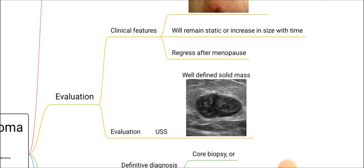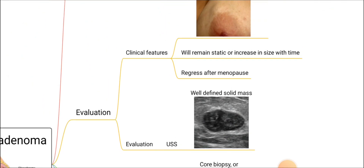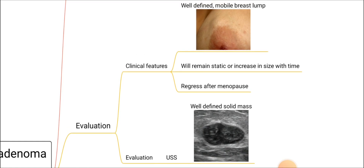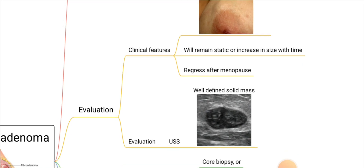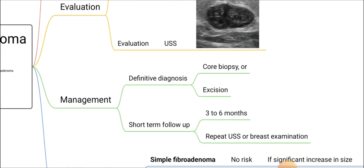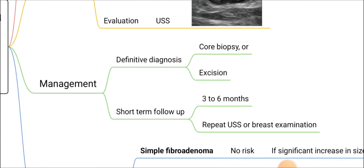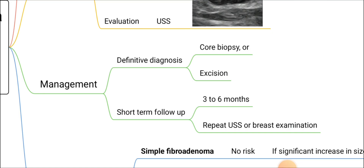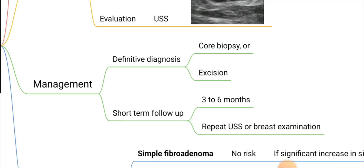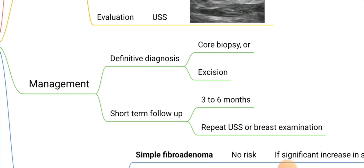After ultrasound scan, if there is a strong suspicion of fibroadenoma, further management can proceed as follows. Either we can come to a definitive diagnosis by doing a core biopsy or excision biopsy, or alternatively we can do short-term follow-up: reassure the patient and follow up in three to six months.